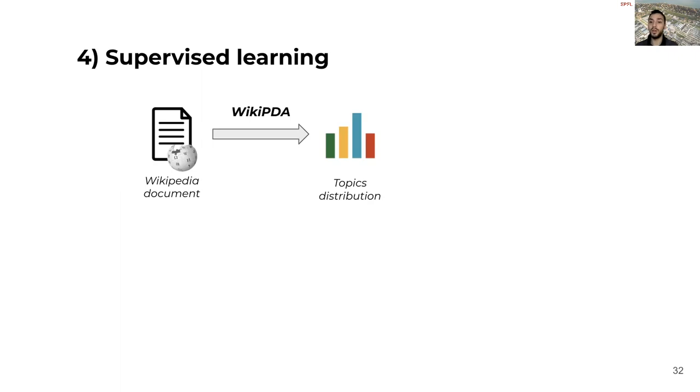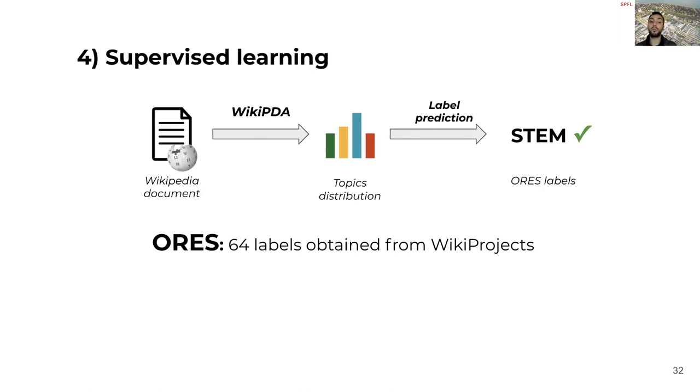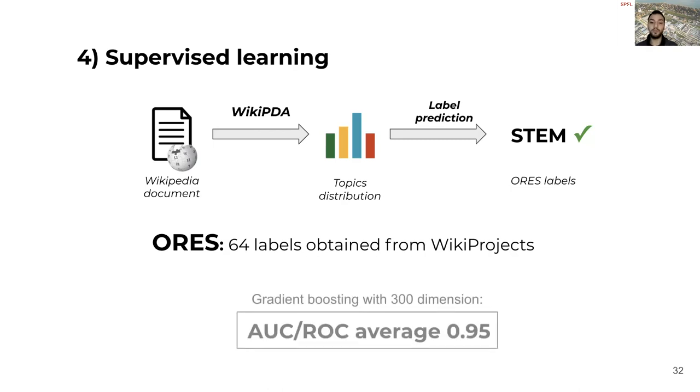Finally, we explored the quality of the topics distribution obtained with a different type of task. We assumed that if a topic distribution is an accurate description of the subjects covered in the article, this vector can be used for other tasks. We tested this hypothesis by training the supervised model using the labels from ORES. ORES is a standard Wikipedia article classifier, currently available only for English, and it can offer 64 categories that were manually defined starting from the organization of the wiki projects. We reproduced a similar setup using ORES, where each class is a binary classifier, and we computed the AUC on a balanced dataset. With gradient boosting model and 300 dimensions, we obtained an average AUC of 0.95 for English. Other languages show similar performance, making WikiPDA suitable also to be used in a language independent supervised task.